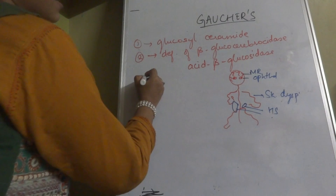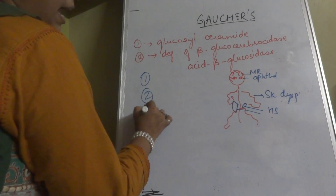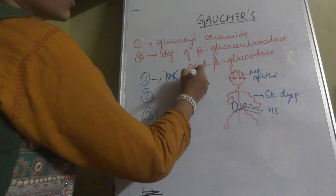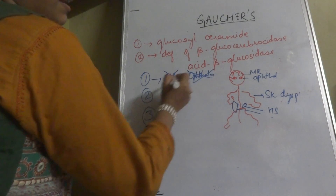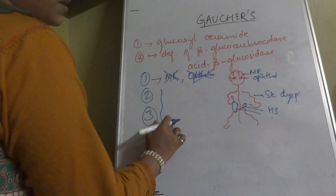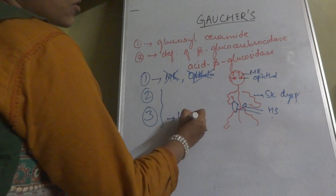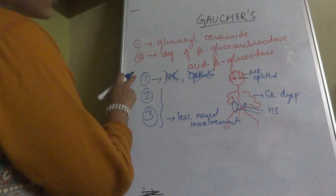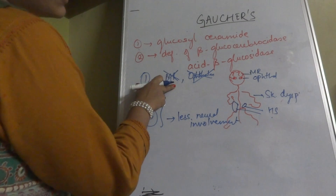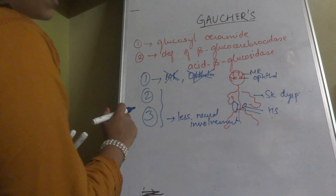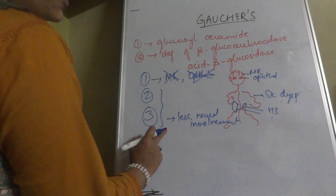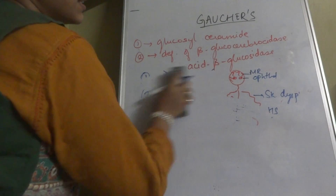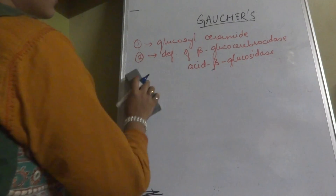There are Type 1, Type 2, and Type 3 Gaucher's disease. Type 1 is the most favorable, having no mental retardation and no ophthalmic involvement. Types 2 and 3 have all features, but Type 3 has comparatively less neural involvement. Types 1, 2, and 3 all present with hepatosplenomegaly and skeletal dysplasia.